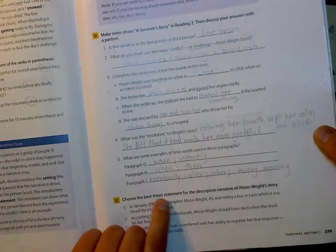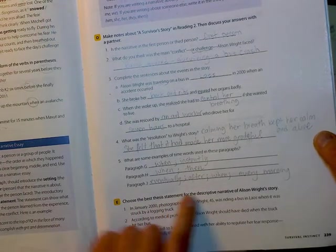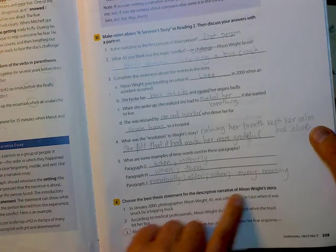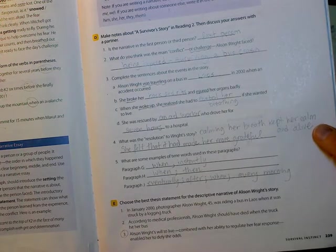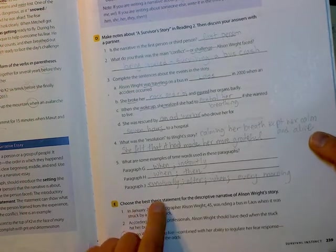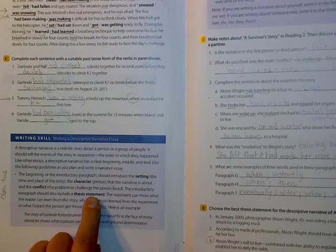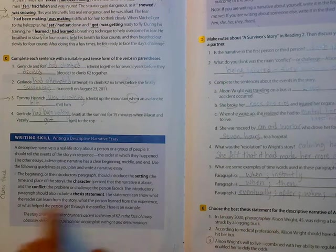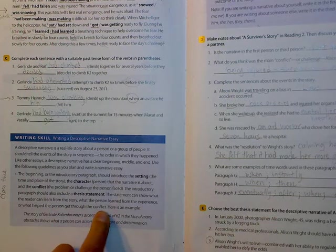And E. Choose the best thesis statement for the descriptive narrative of Allison Wright's story. So the descriptive narrative means a descriptive story. That's what we read. Now we want to choose the best thesis statement. Hopefully if we read the writing skills paragraph, we see thesis statement here in bold. It says the introductory paragraph should also include a thesis statement. The statement can show what the reader can learn from the story, what the person learned from the experience, or what helped the person get through the conflict.